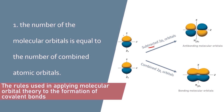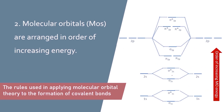We started with two atomic orbitals, and the result is two molecular orbitals. Similar to atomic orbital arrangements, molecular orbitals are arranged in order of increasing energy. Here you can see the combination of the 1s, 2s, and 2p atomic orbitals results in the formation of new combined molecular orbitals, with energy increasing from bottom to top.